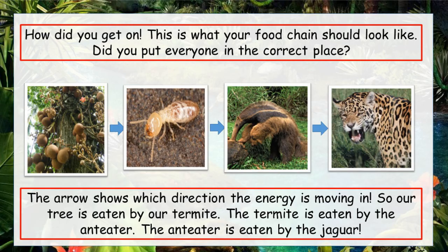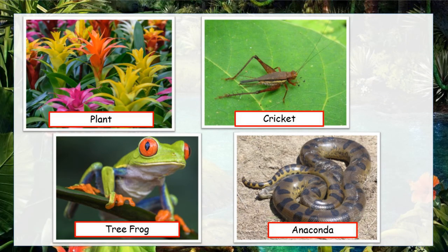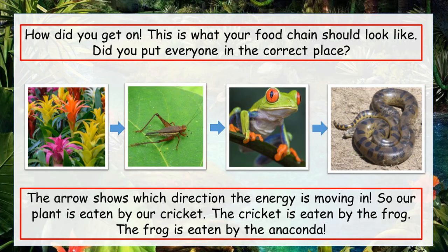Here's what your food chain should look like. At the start of the food chain is the Brazil nut tree, which is eaten by the termite, who is eaten by the anteater, and the anteater is eaten by the jaguar. Let's try another one. Here are four different snaps I took on the last trip — we have a plant, a cricket, a tree frog, and an anaconda. Can you put these in the correct order on a food chain? Pause the video and give it a try. Our plant is eaten by the cricket, the cricket is eaten by the frog, and the frog is eaten by the anaconda.